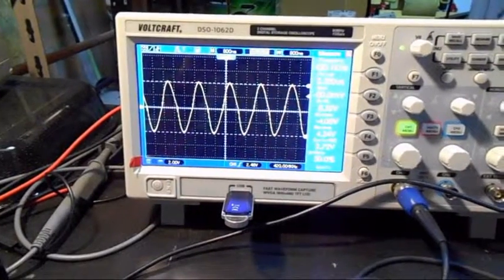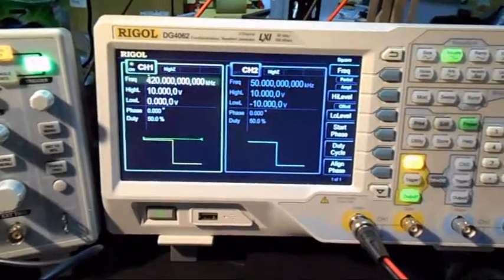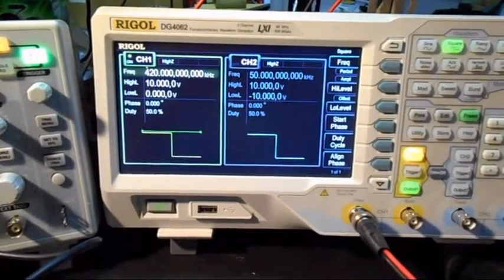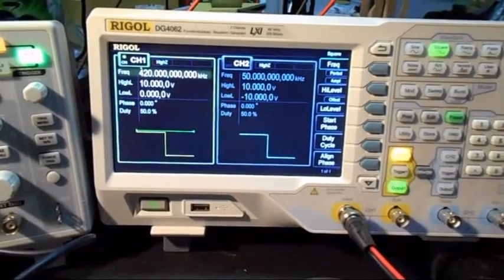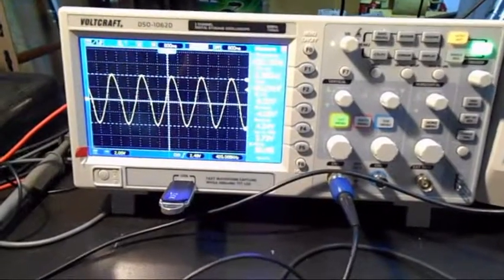This is the current that has been drawn from the function generator. Although the output of the function generator is a block wave, it's due to the capacitance and induction that we get a sine wave.